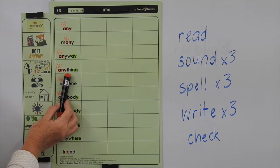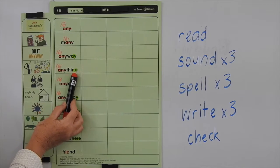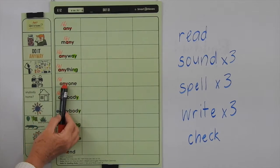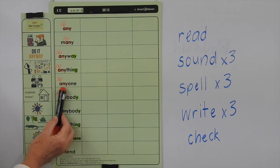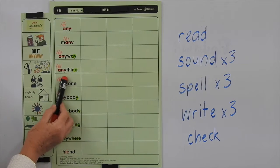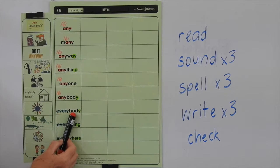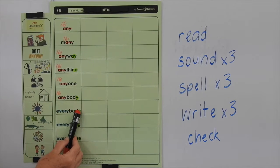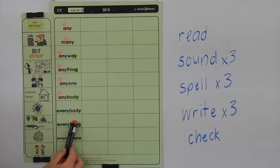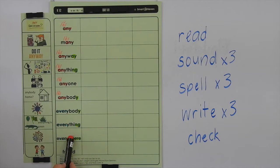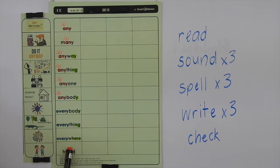'Anything' refers to a thing no matter what. 'Anyone' means the same as anybody — it means any person. 'Everybody' means every person. 'Everything' means all the things that you're talking about. 'Everywhere' means every place, all the places. And 'friend' means your pal, someone you like to be with.